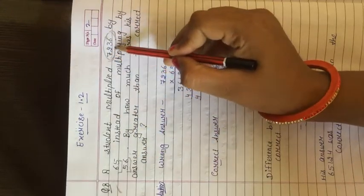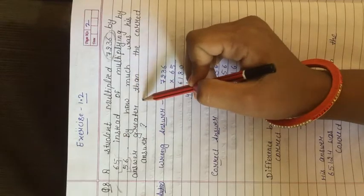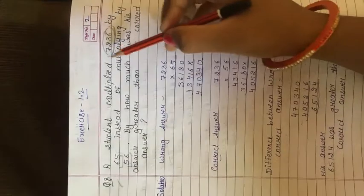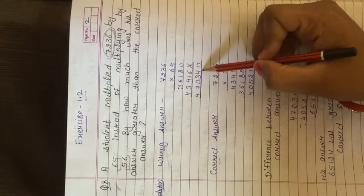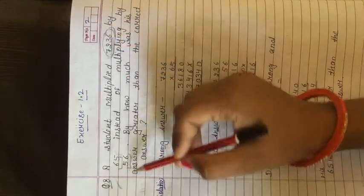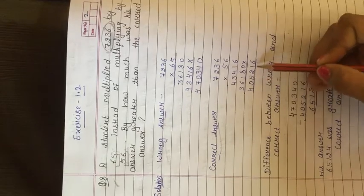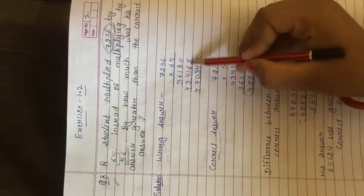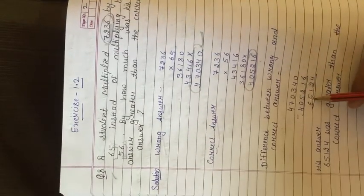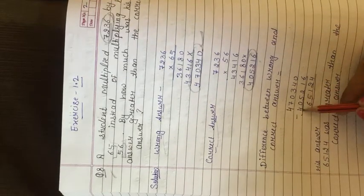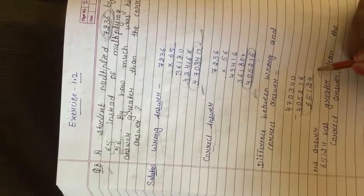Correct answer will be 7,236 multiplied by 56. He multiplied by greater value, so his answer will be greater. We need to find the difference. Wrong answer: 7,236 multiply by 65 equals 4,70,340. Correct answer: 7,236 multiply by 56 equals 4,05,216. Difference: subtract to get 65,124. The wrong answer is greater than the correct answer by 65,124.